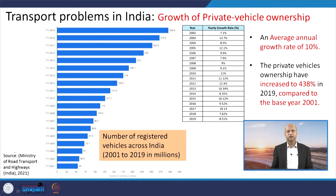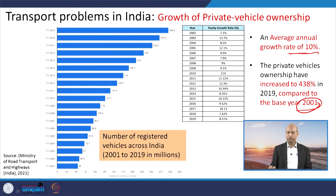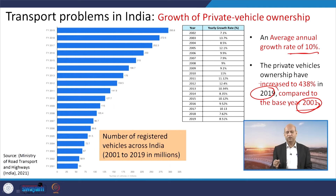Looking at the growth in privately owned vehicles, around 10 percent annual increase was seen, and comparing 2001 to 2019 data, there has been approximately a 438 percent increase in privately owned vehicles. This shows that the demand for mobility by the public was not met properly by public transportation, and people had to resort to their own vehicles.